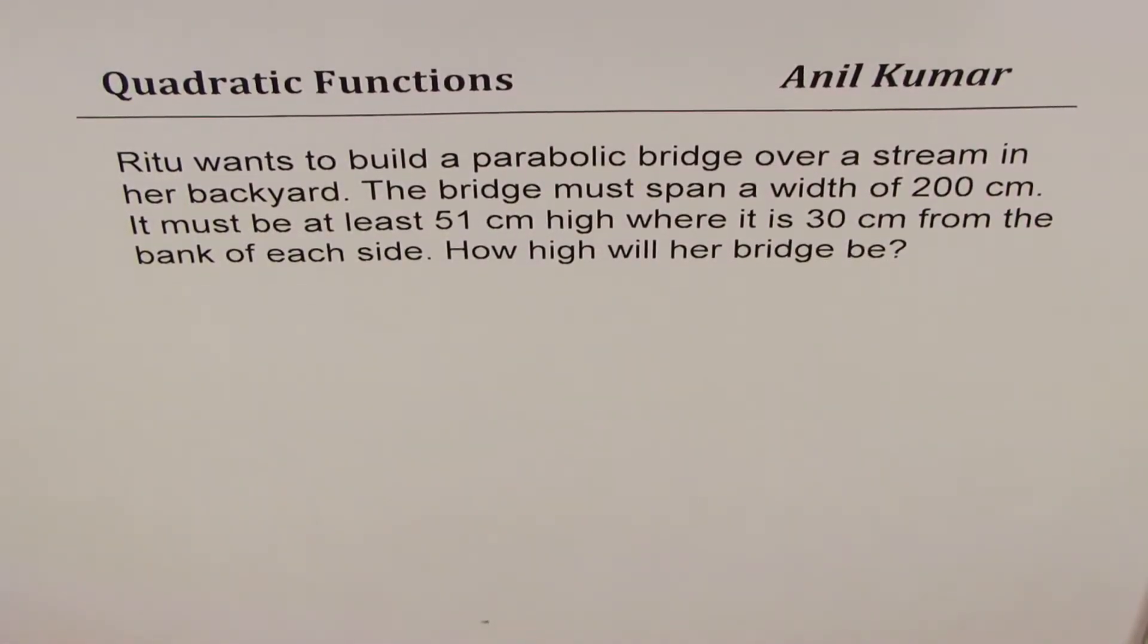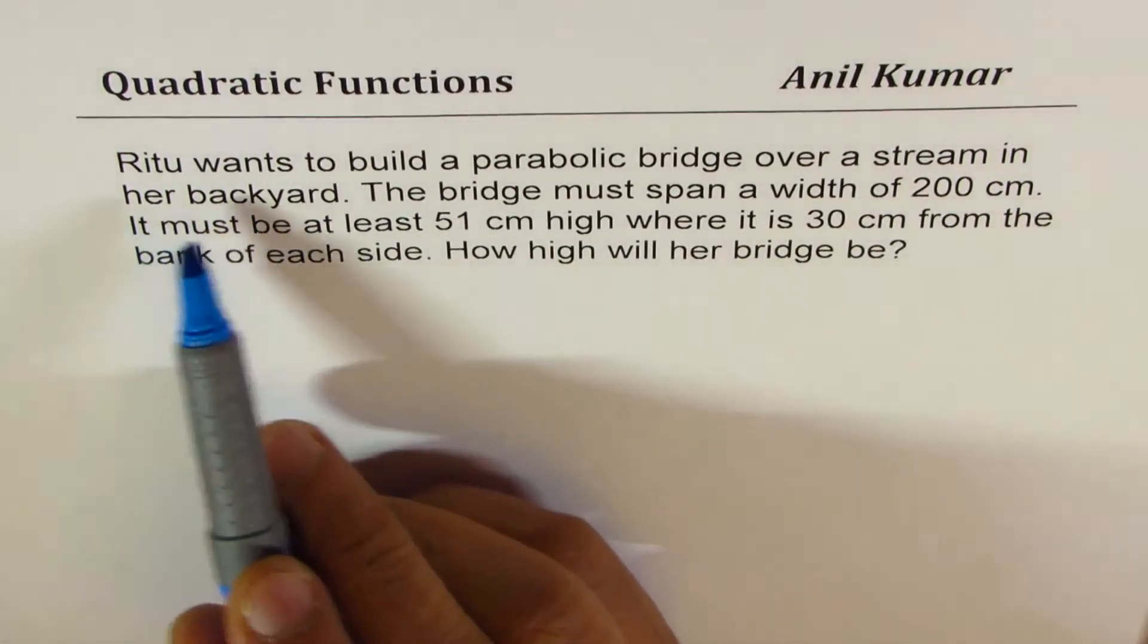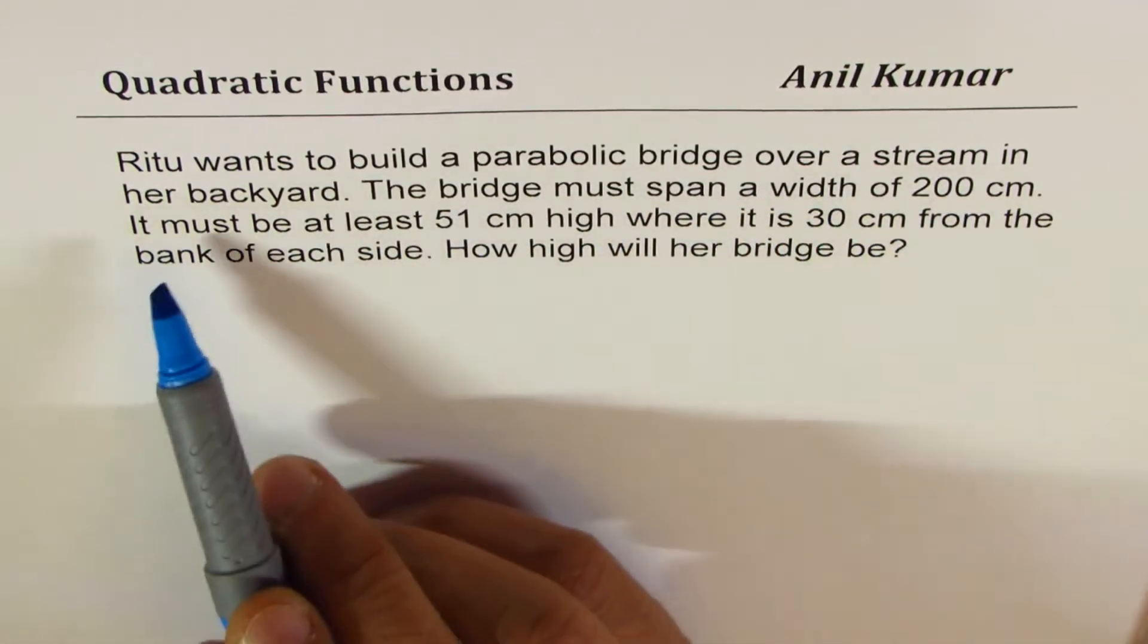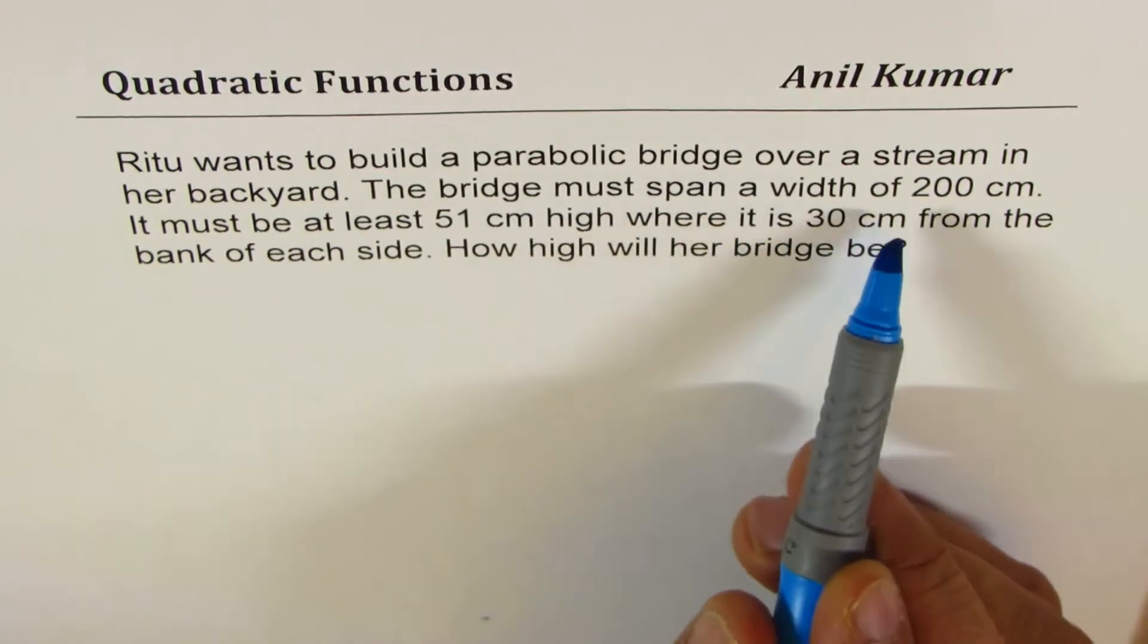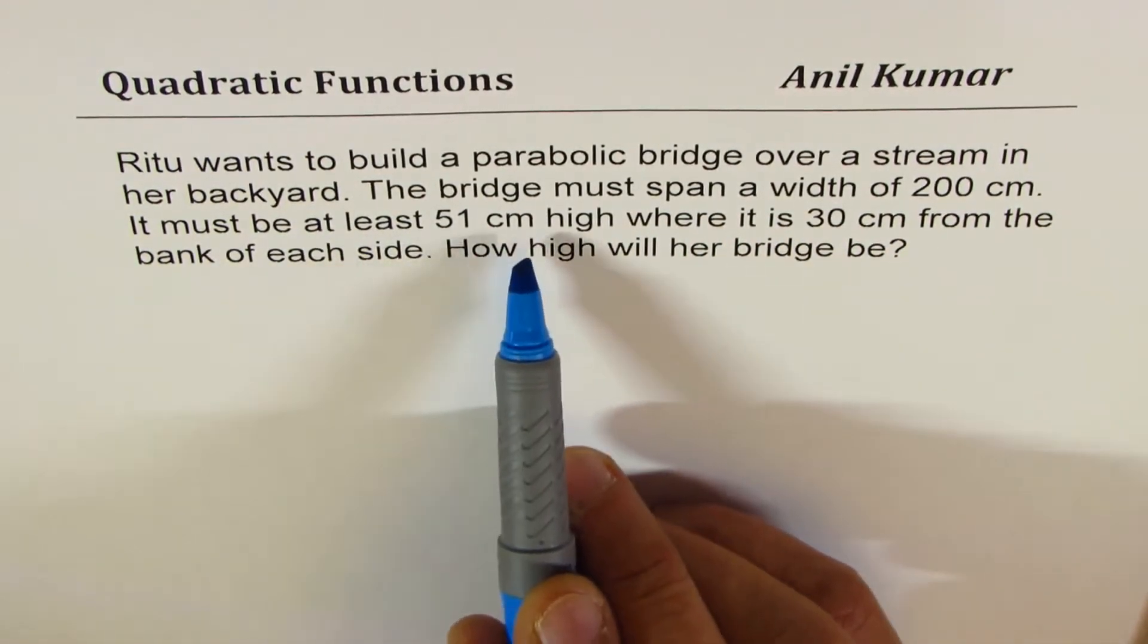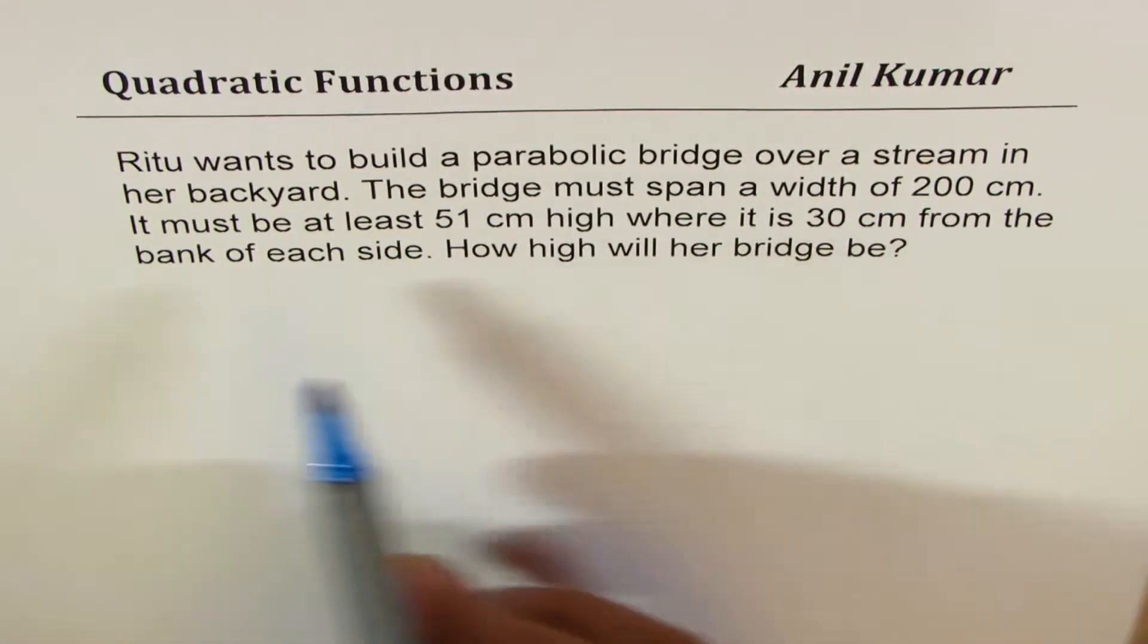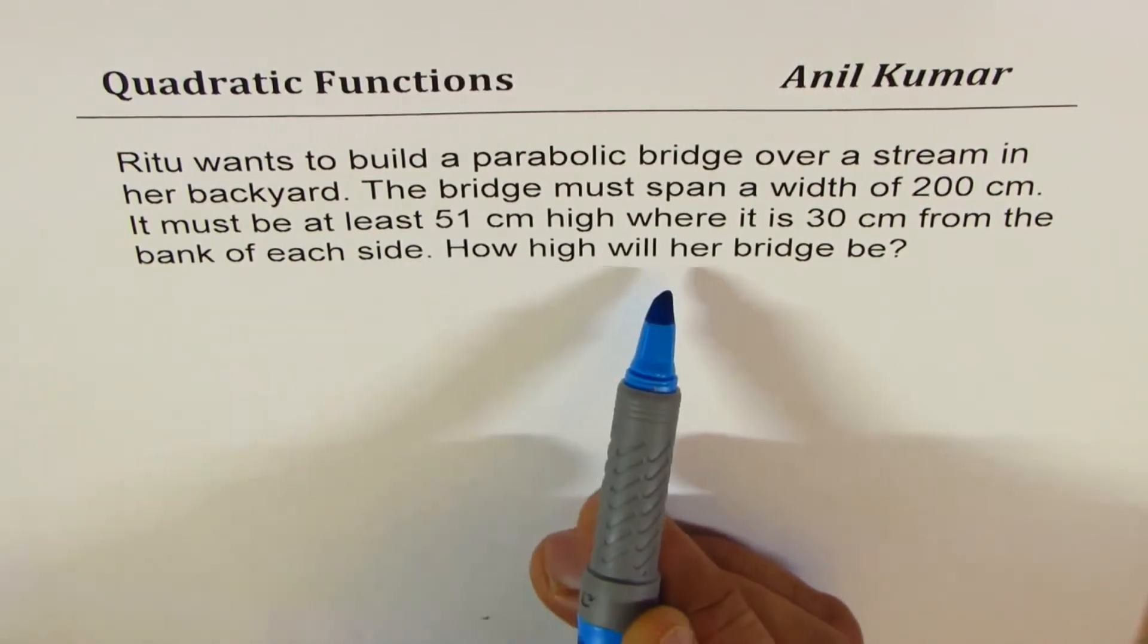I'm Anil Kumar sharing with you an application question on quadratic functions. The question here is Ritu wants to build a parabolic bridge over a stream in her backyard. The bridge must span a width of 200 centimeters, it must be at least 51 centimeter high where it is 30 centimeter from the bank of each side. How high will her bridge be?